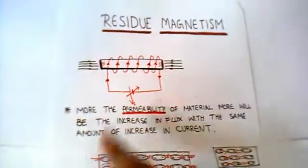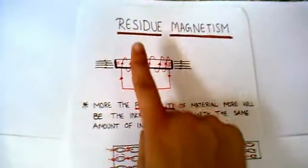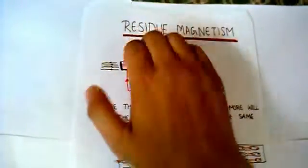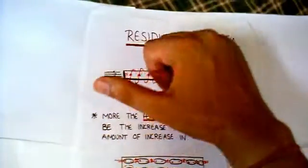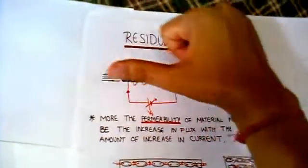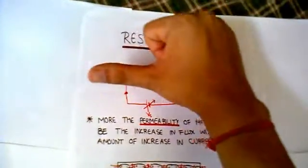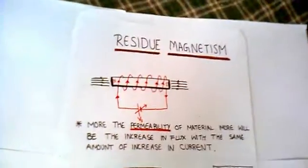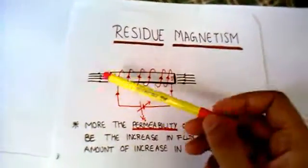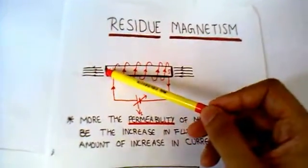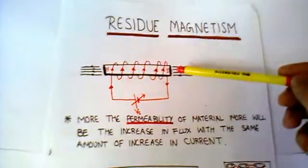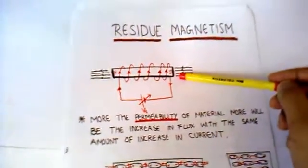As the current is flowing in this direction, the flux will come out from here. That means this will be our north pole and this will be our south pole.